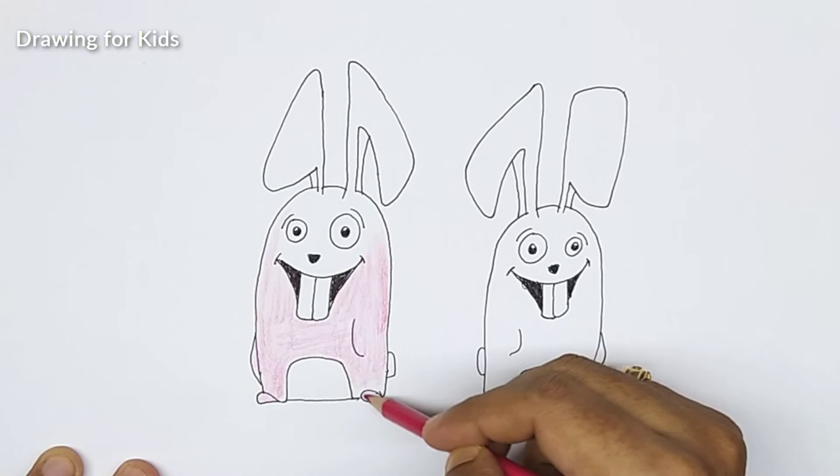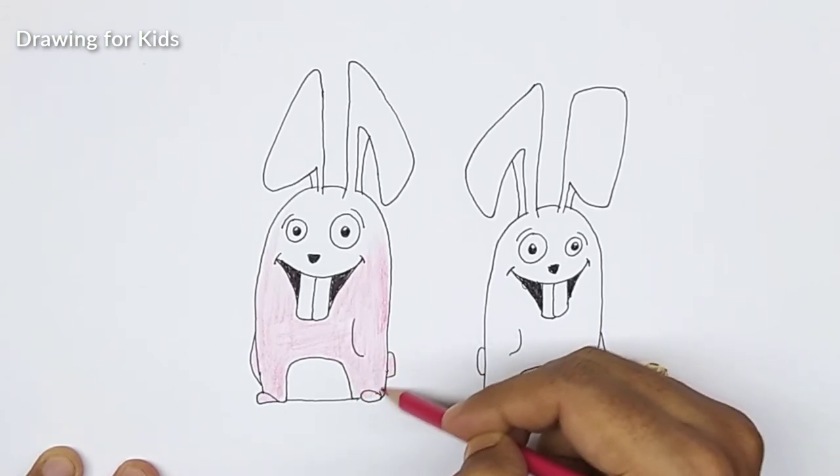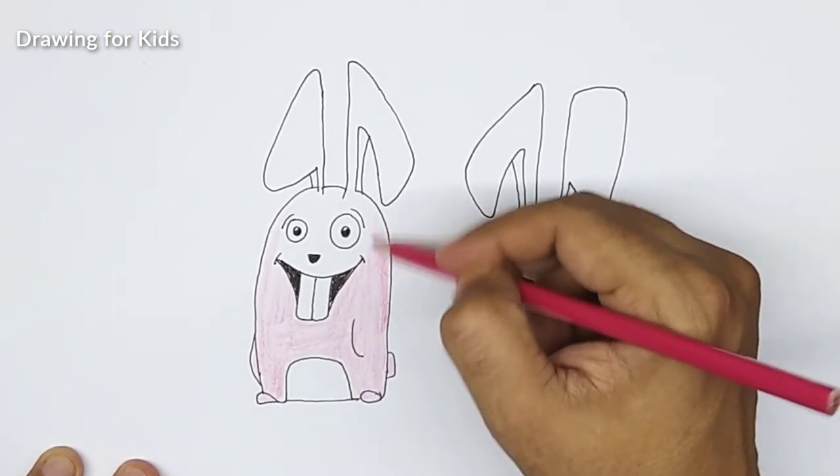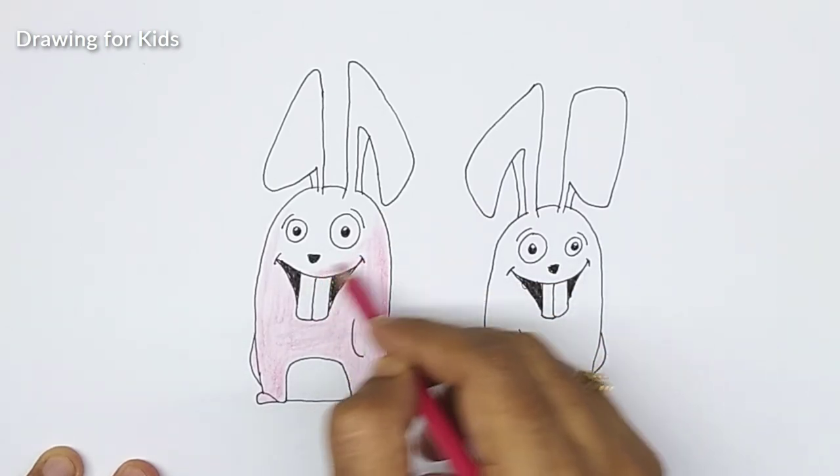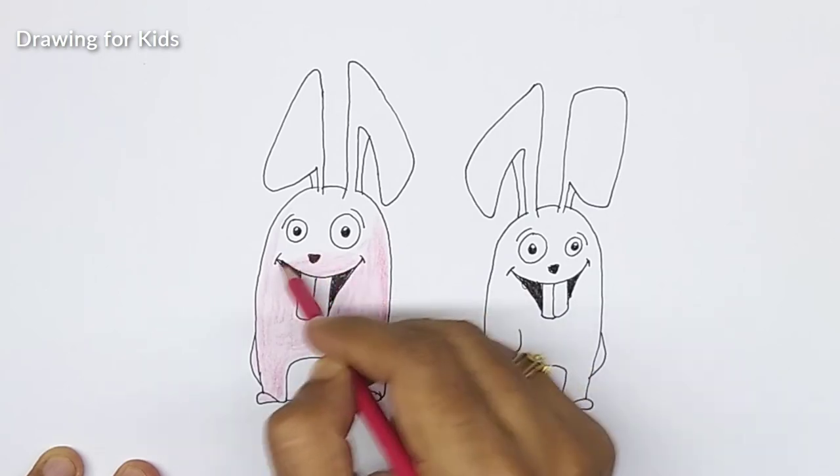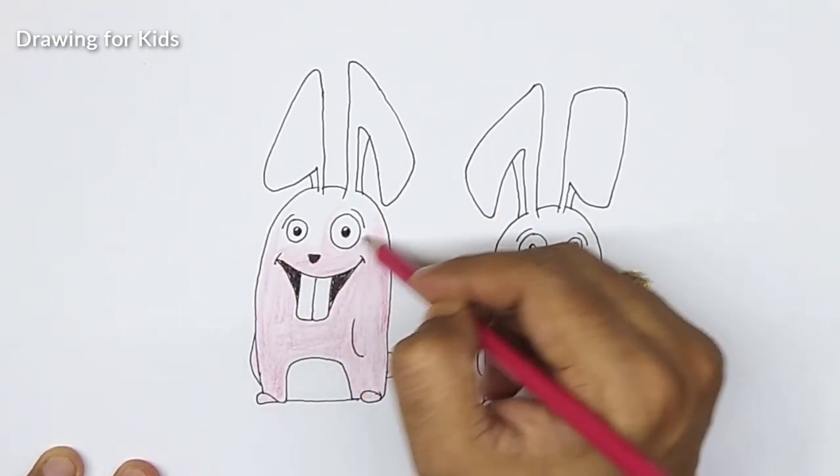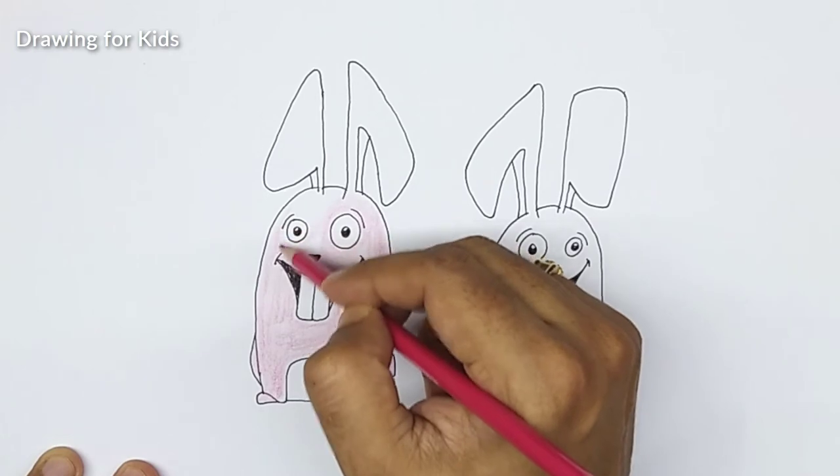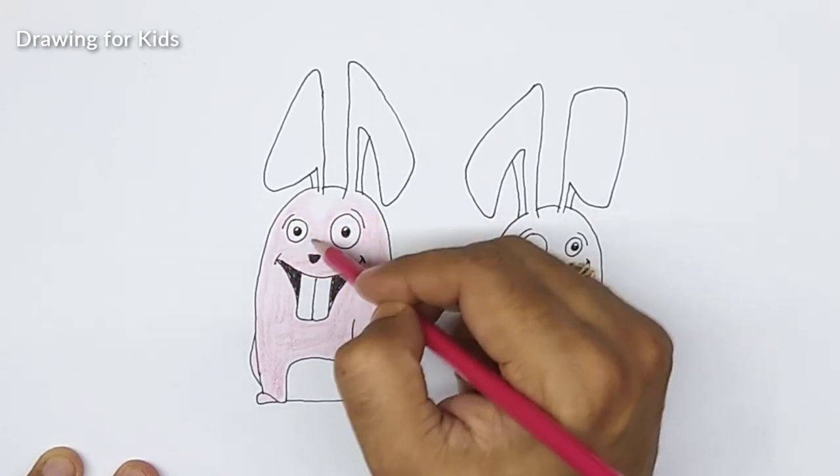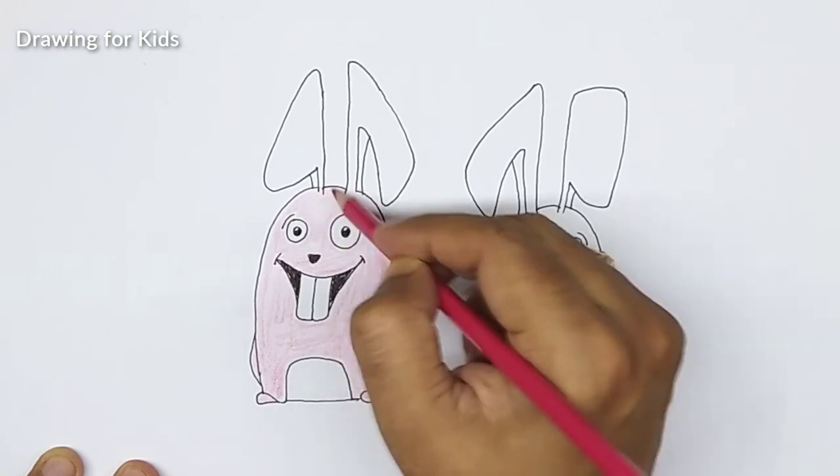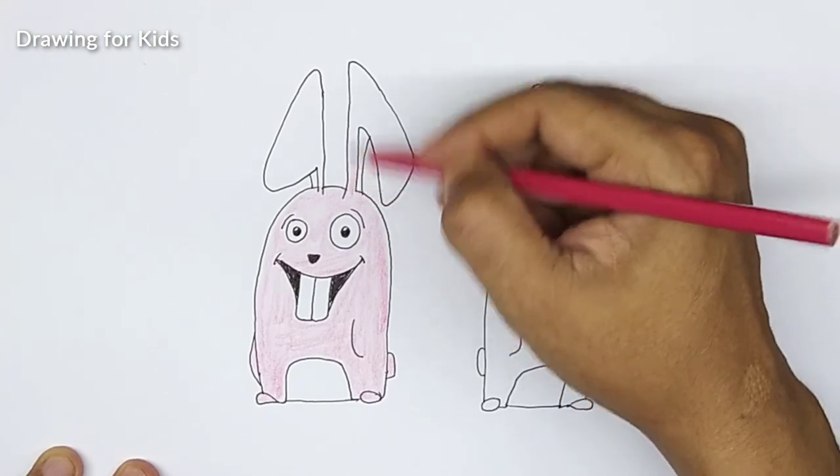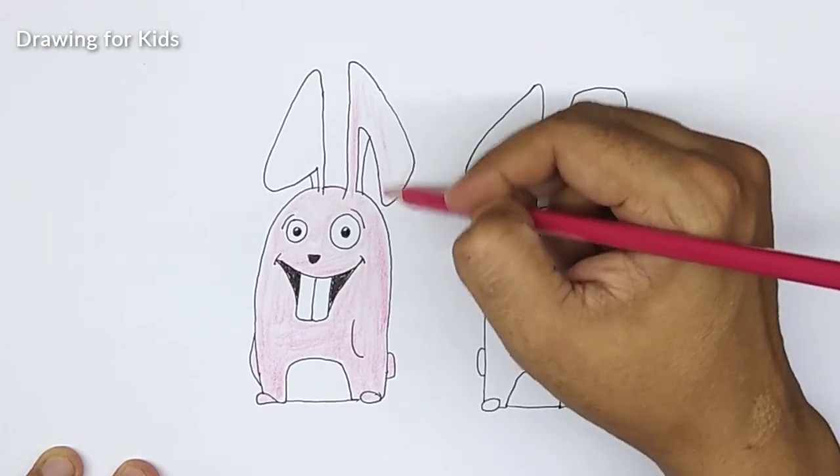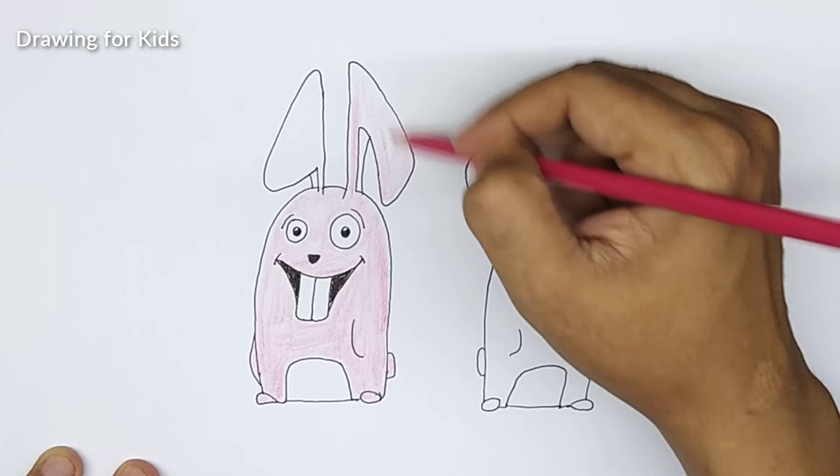So one will make pink the other one will make blue. This is the body, be connected, almost. Around the eyes, second eye. Okay, the ears.